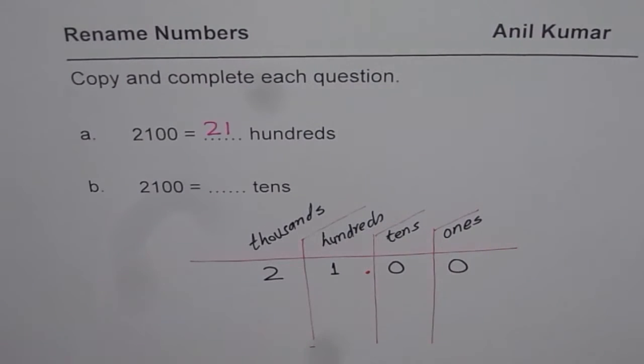Zeroes after decimal can be dropped. So 2100, which actually is 2100 ones, can be written as 21 hundreds. Do you see that?